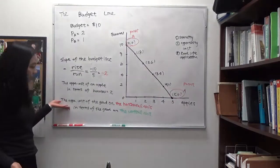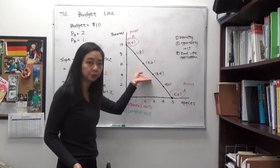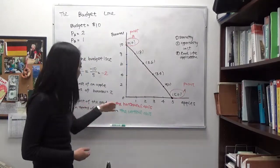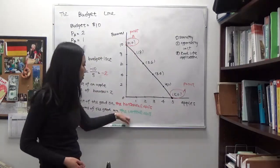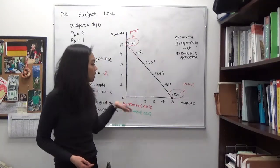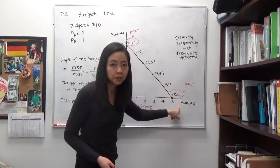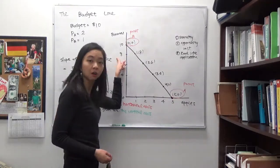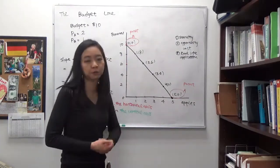So you can see the slope of a budget line tells you the opportunity cost of an apple in terms of bananas. Or, more generally, you can say that the slope of a budget line tells you the opportunity cost of the good at the horizontal axis in terms of the good on the vertical axis. In order to get 1 good on the horizontal axis, how many of the good on the vertical axis do you need to sacrifice? That's the meaning of the budget line.